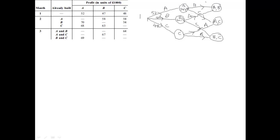If we put the amounts in now from this table here, we can see that in the second month, if we've already built A, to build B costs 58, and to build C costs 54. If we've already built B, to build A costs 70, and to build C costs 54. Here, if we've already built C, then to build A costs 68, and to build B costs 63.